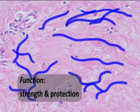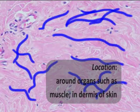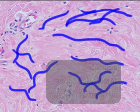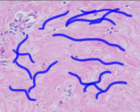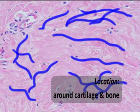We find it commonly wrapping around organs like muscle. It's also found within the thick dermis of the skin, as protective coverings around cartilage and bone in the perichondrium and periosteum respectively, and it plays a role in joints as well.